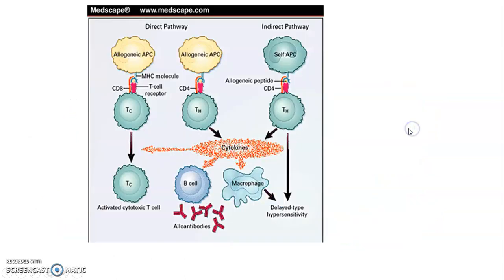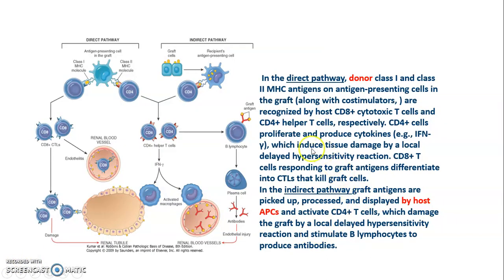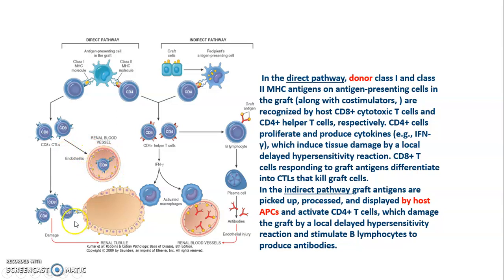CD4 cells proliferate and produce cytokines — interferon gamma — which induce tissue damage by delayed type hypersensitivity reaction. CD8 T cells respond to graft antigens and differentiate into CTLs that kill the graft cells by causing endothelitis or by damaging the tubular cells.